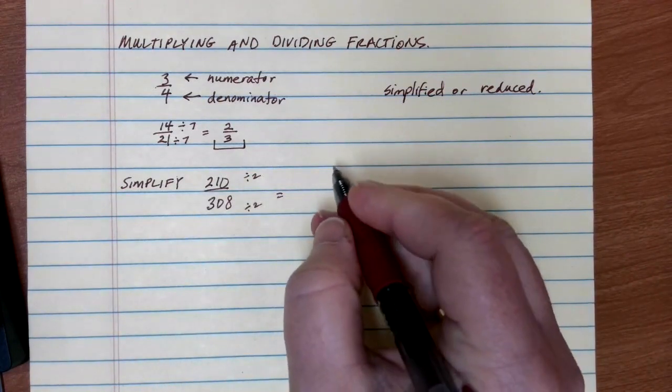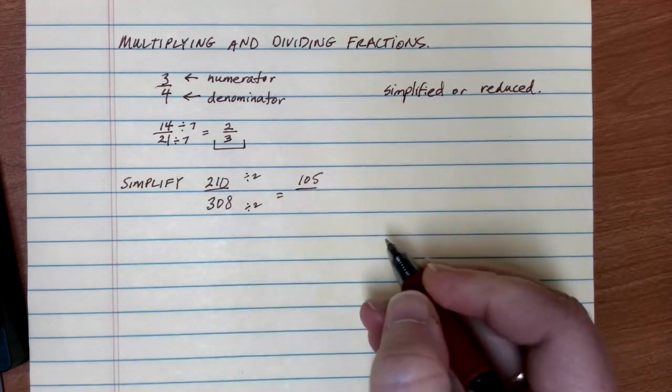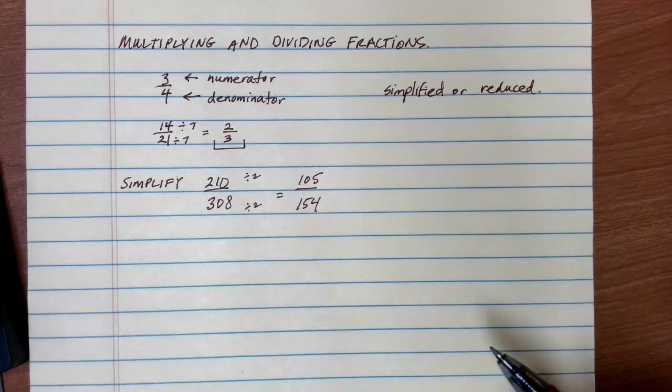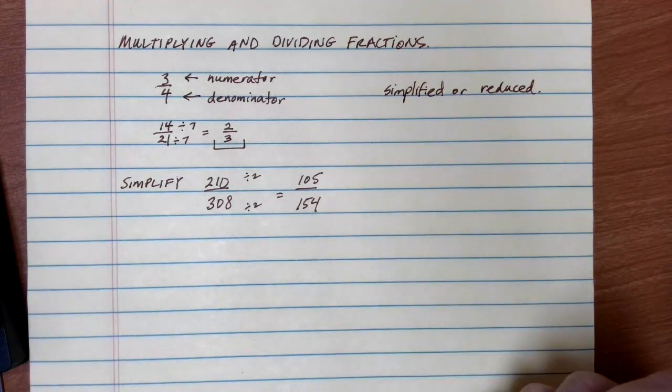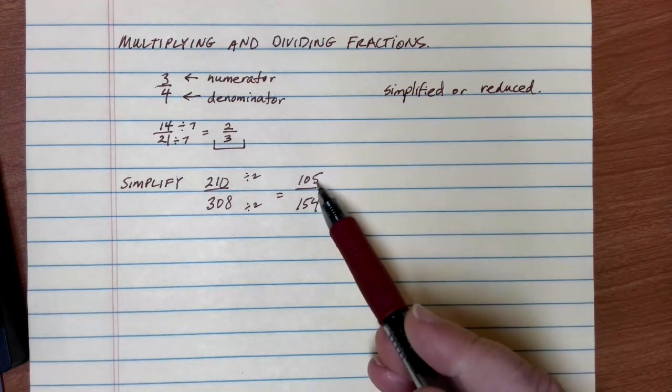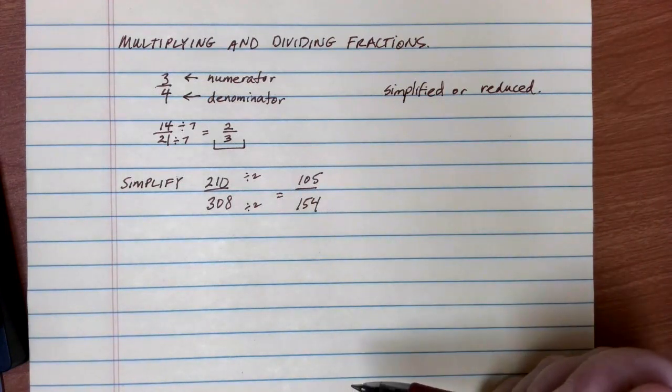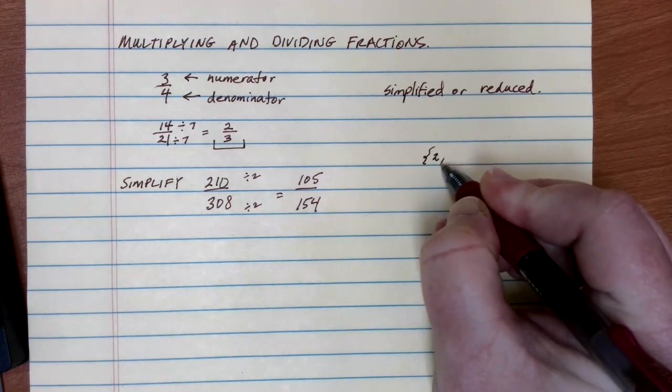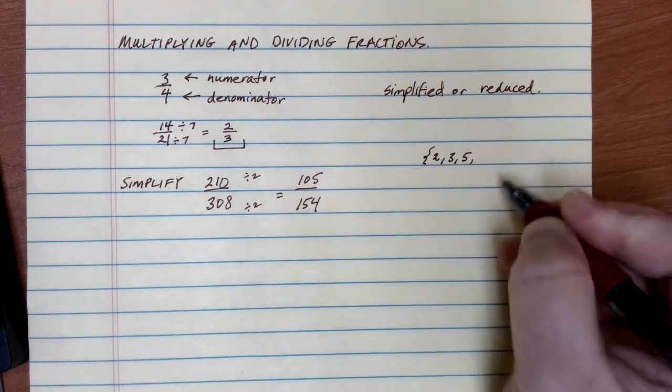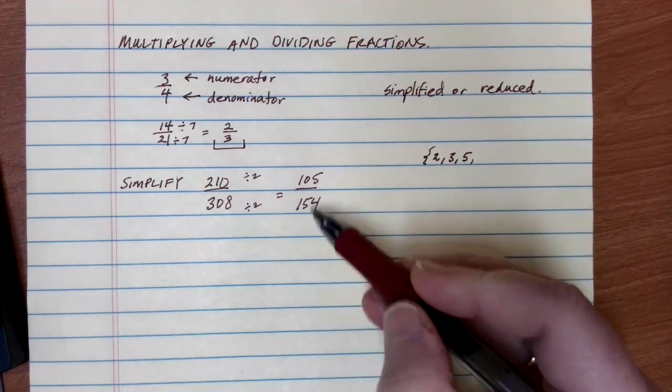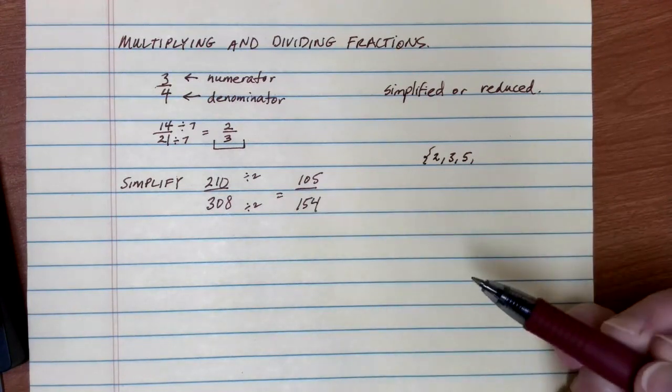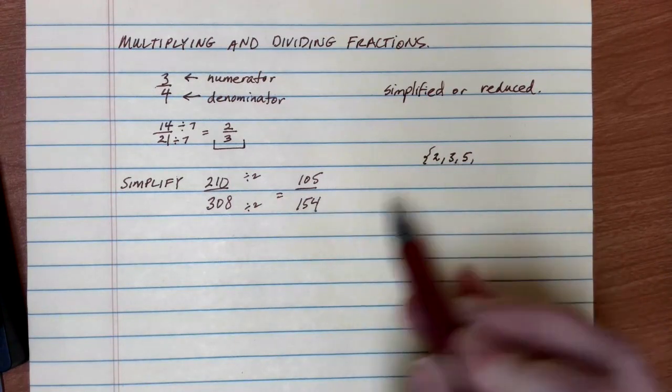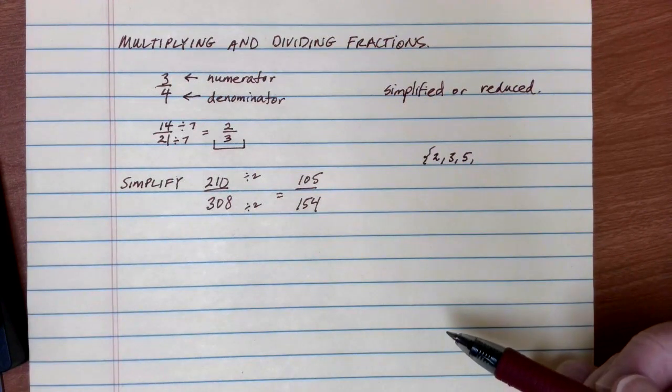When I divide the top by two, 210 divided by two gives me 105. When I divide the bottom by two, 308 divided by two gives me 154. It's still pretty big, but the numbers are a little bit smaller. I do have a strategy that I generally follow when I'm trying to simplify things. I go through the prime numbers to check if any of these will go in. Two doesn't go in evenly anymore. Then I can try three. 105 divided by three goes in evenly, but 154 divided by three gives me a decimal, so that doesn't work.